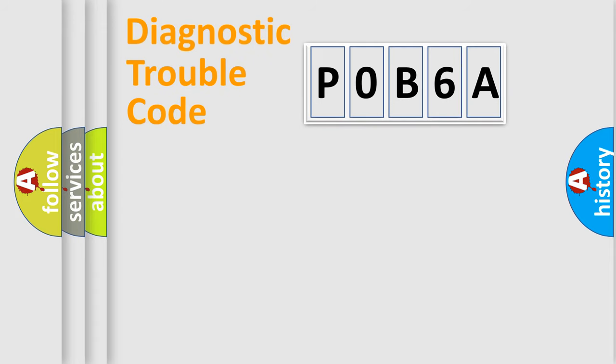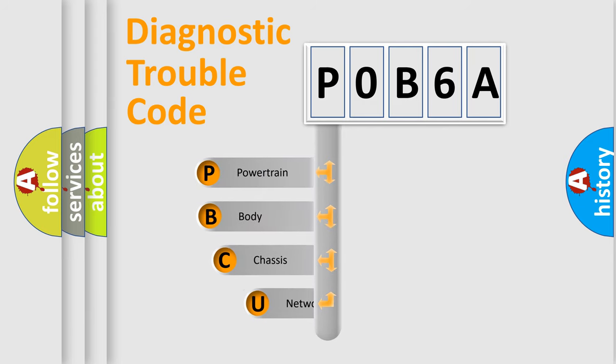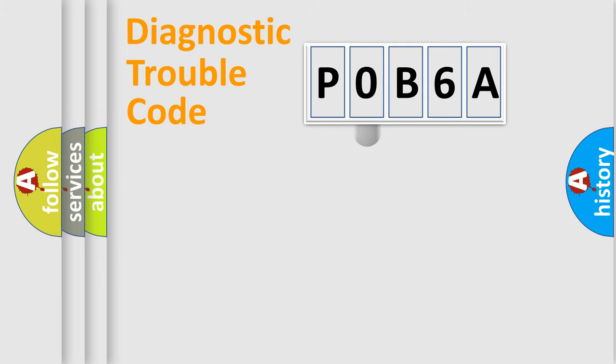First, let's look at the history of diagnostic fault code composition according to the OBD2 protocol, which is unified for all automakers since 2000. We divide the electric system of automobile into four basic units: Powertrain, Body, Chassis, and Network. This distribution is defined in the first character code.